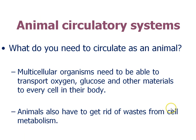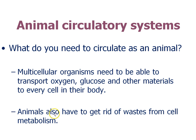Animal circulatory systems — why do you need to circulate? Multicellular organisms need to get oxygen, glucose, amino acids, and other nutrients to every cell of the body, which is what the circulatory system does. Animals also have to get rid of metabolic waste like urea and ammonia from cell metabolism; if they build up, it's toxic. An excretory system removes these from the blood. Turn to your partner and explain why we need a circulatory system.